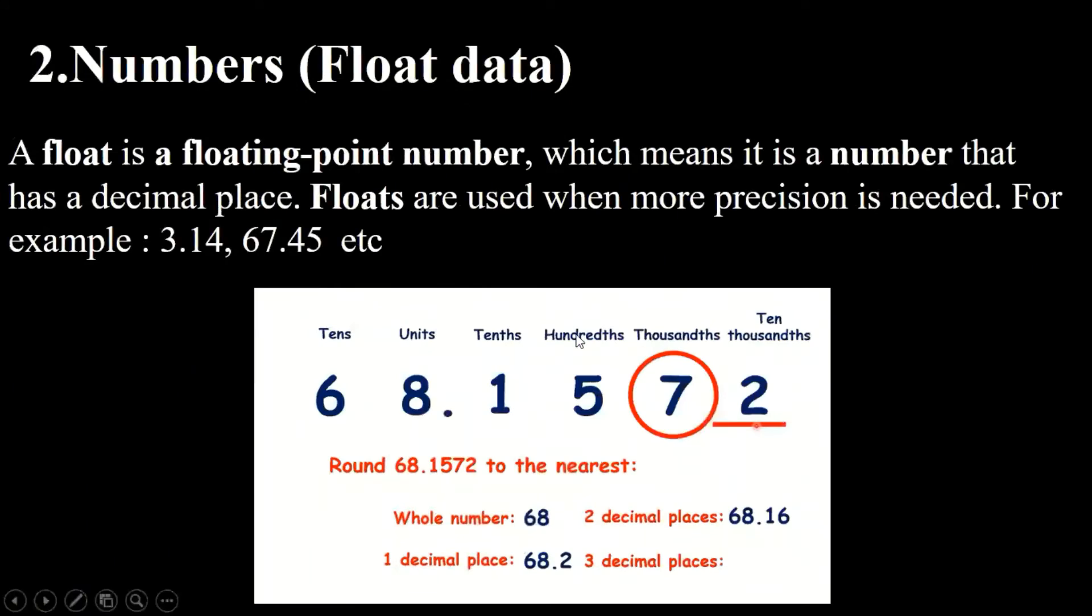Next one is another type of number that is called floating data or float data. A float is a floating point number, which means it is a number that has a decimal place. Floats are used when more precision is needed, for example 3.14, 67.45, etc. And there is another example of data in the image. You can see 68.1572.